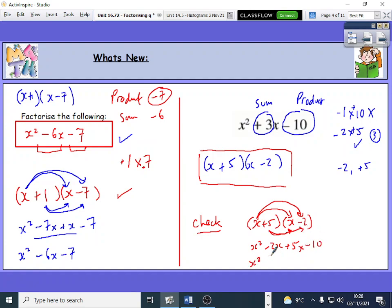If I collect these middle terms together, minus 2 plus 5 is plus 3x, and that's minus 10. So I know for a fact I've done it right.